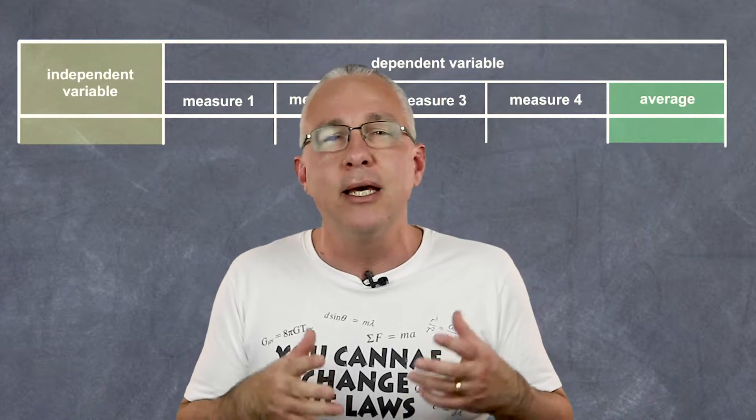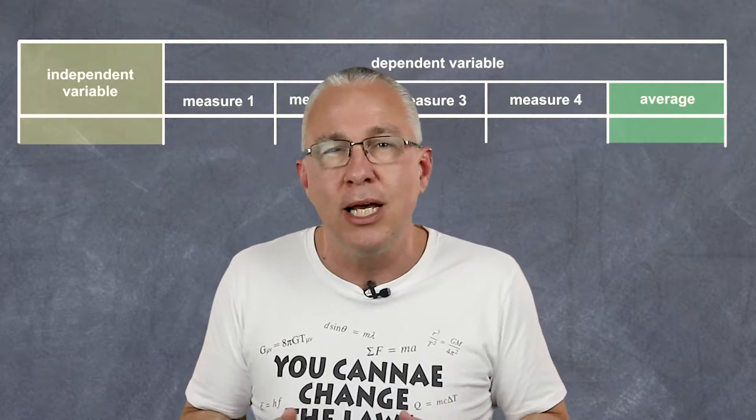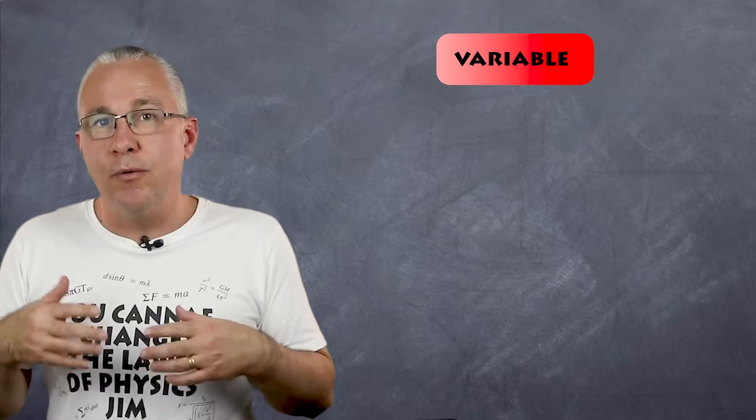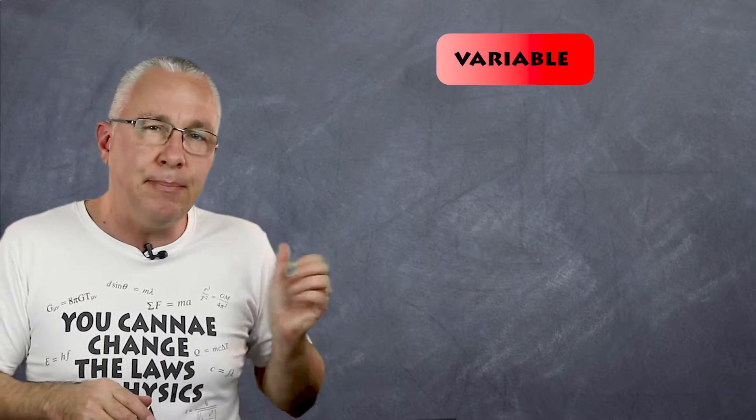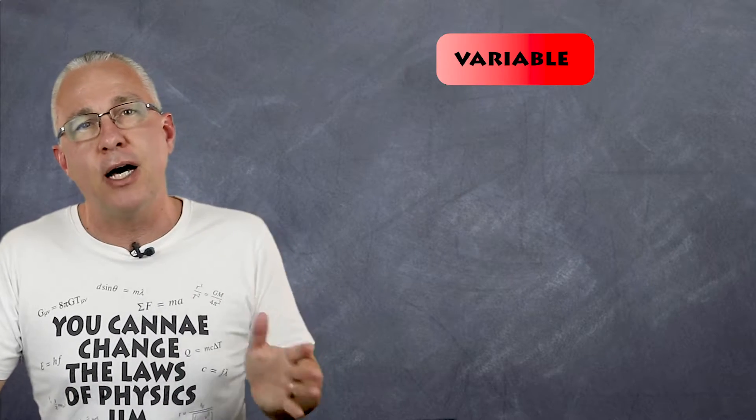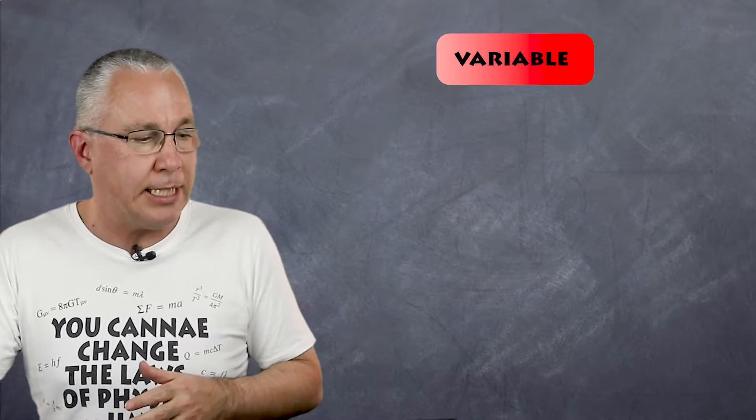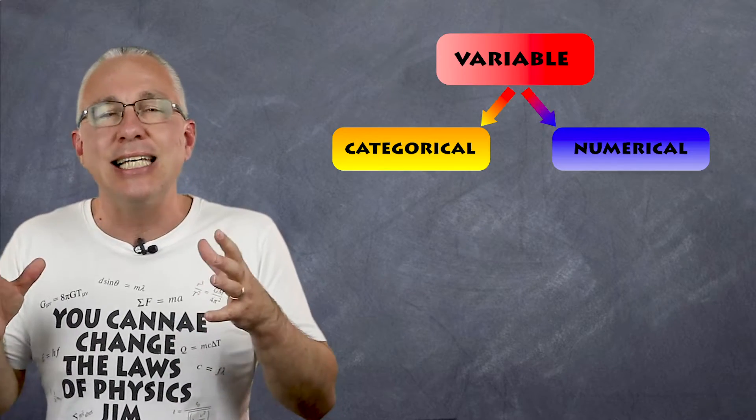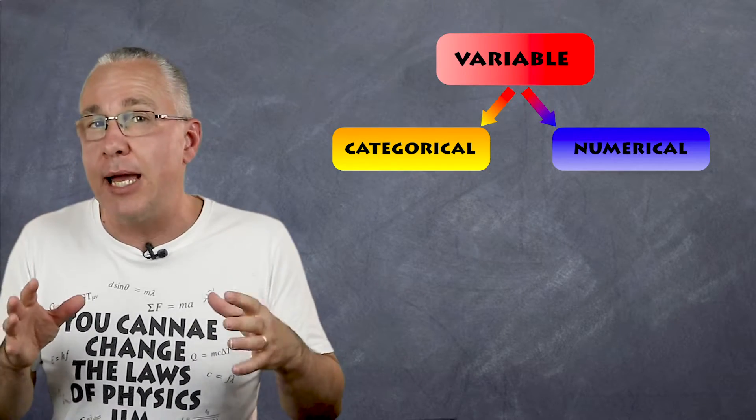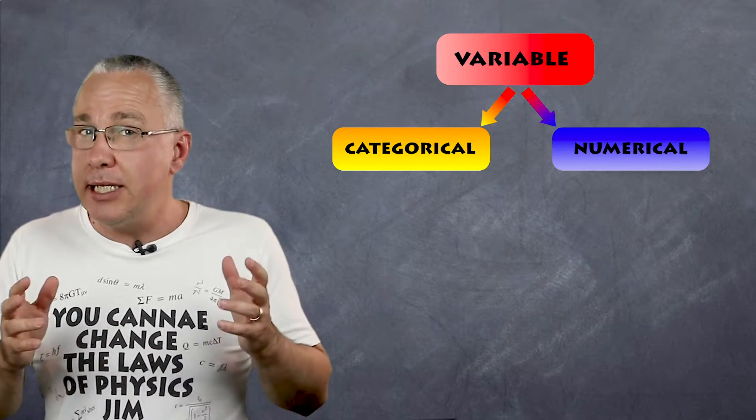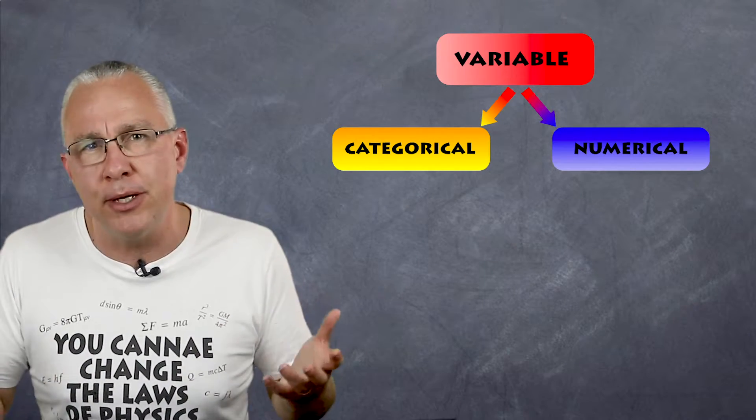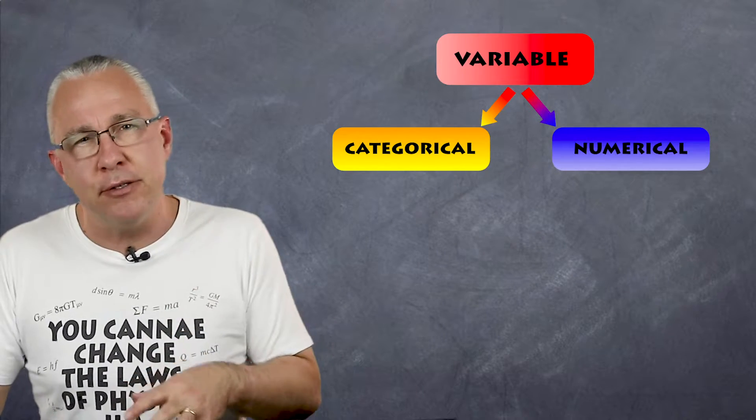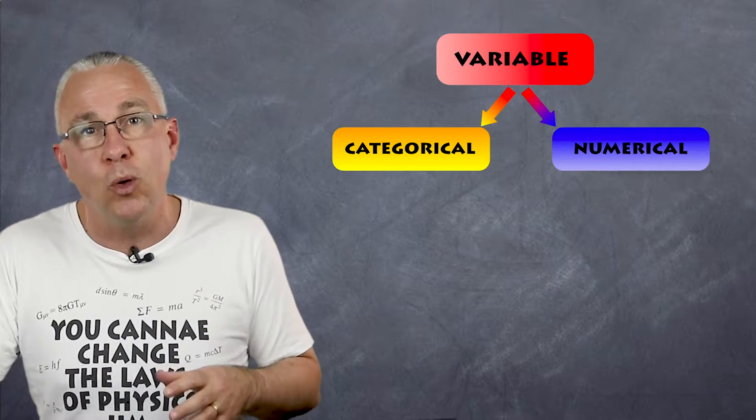Before we talk about the type of graphs that we need to draw, let's quickly review the types of variables that you're going to be encountering. Variables, whether independent or dependent types, can be divided up into two subsets. The first is what we refer to as categorical. In other words it has a category, a name or grouping associated with it. The second one is numerical, that is it's associated by a number.